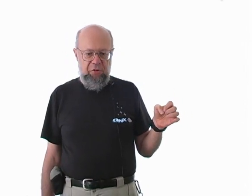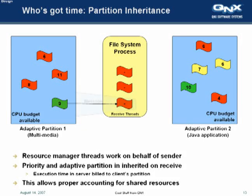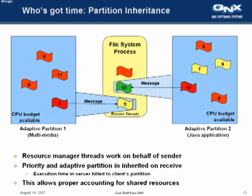And in this particular example, if you click the animation, you'll see that the thread in partition 1 is running. And it sends a message to the file system process, which is not in any partition right now. And as it does that, the file system or server thread is temporarily promoted into the partition of partition 1 and thread 9. Should some other thread, say in partition 2, also send a message to the same file system process, that different thread now becomes a temporary member of partition 2. So what you see in this case is two threads of one process are actually running in two separate partitions. This is normal.